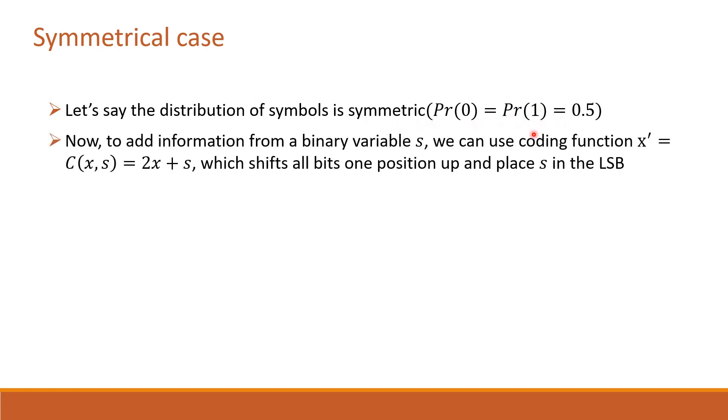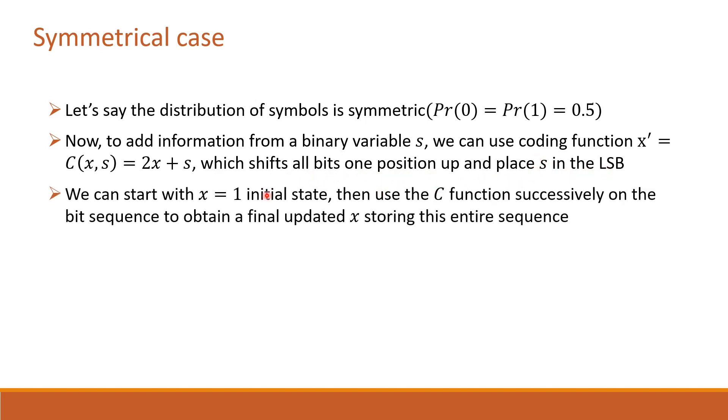Let's understand this with an example. Consider a binary alphabet with equal probable symbols s equals 0 and 1. Say there is a binary sequence which is encoded to a natural number x. Now s is added to the sequence. The new natural number x' corresponding to the updated string is 2x plus s, which is shifting the previous sequence by one position up and placing the new bit s in lsb. Start with x equal to 1 as initial state. Code the sequence using the above function and obtain a final number corresponding to the entire sequence.